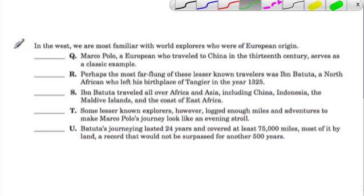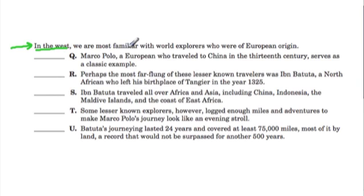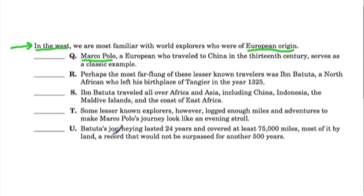This is a typical scrambled paragraph problem. The topic sentence tells us that in the West, we are most familiar with world explorers who are of European origin. Since the topic is about explorers familiar to us from Europe, this implies they'll also discuss those who are lesser known. We have Marco Polo as a typical European explorer, and then descriptions of other lesser-known explorers.